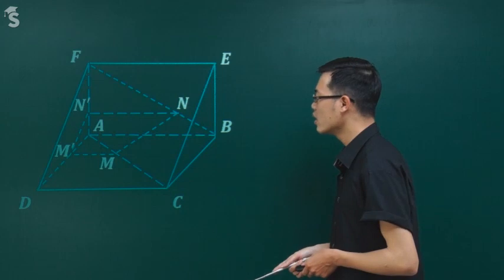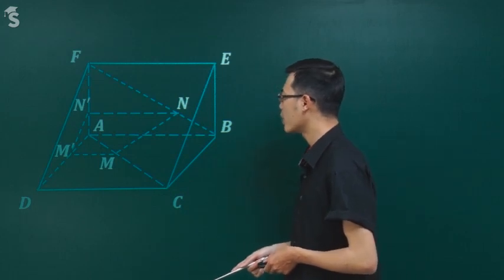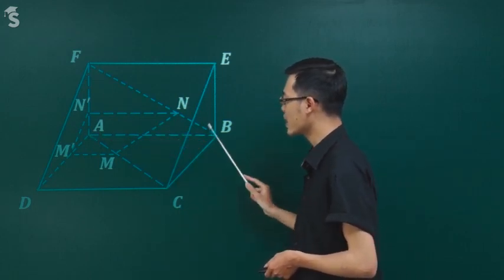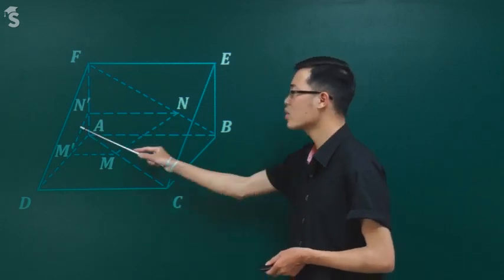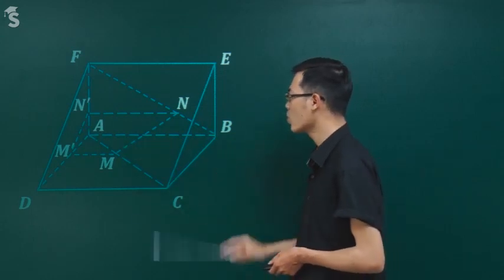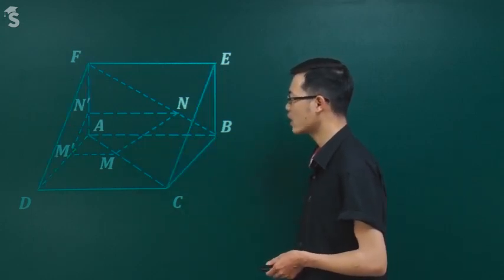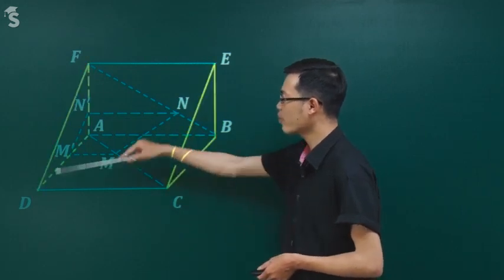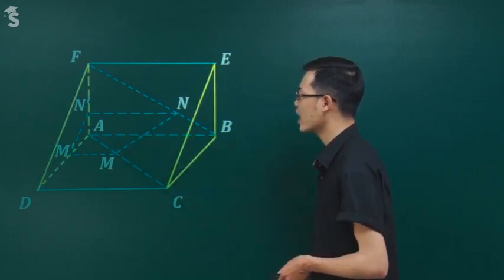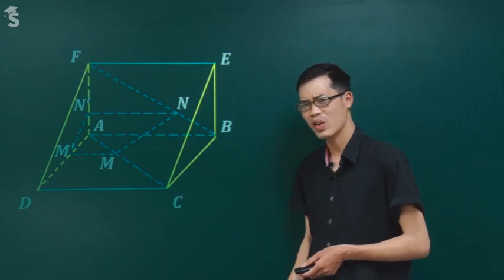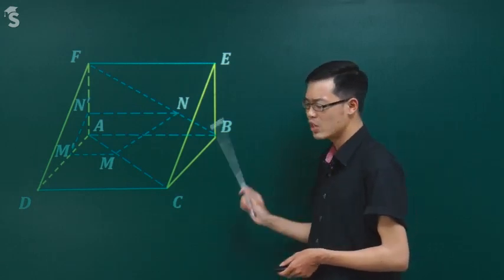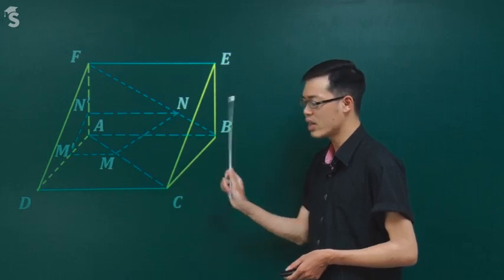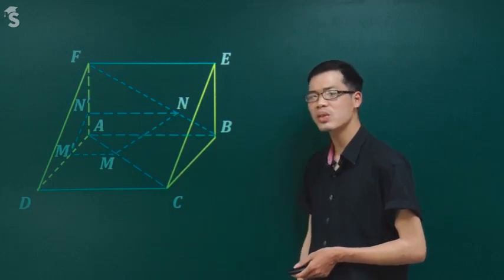Câu đầu tiên là người ta yêu cầu chứng minh mặt phẳng ADF song song mặt phẳng BCE. Hai cái này giống như hai đáy của lăng trụ. Chứng minh hai cái mặt này song song với nhau - đúng là song song thật.